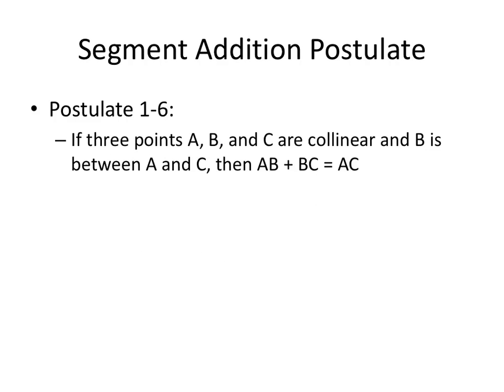Let's look at postulate 1-6. Postulate 1-6 says if three points A, B, and C are collinear and B is between points A and C on that line, then the length of segment AB plus the length of segment BC is equal to the length of segment AC.